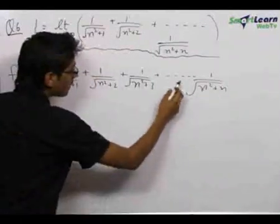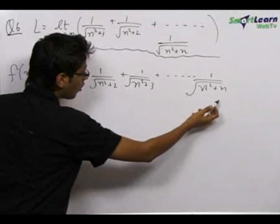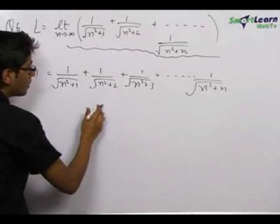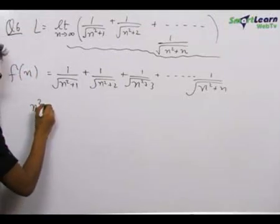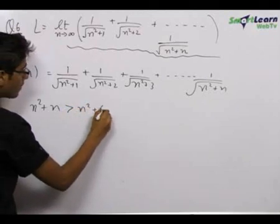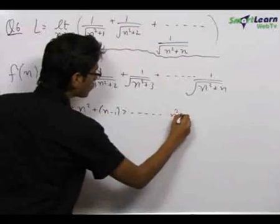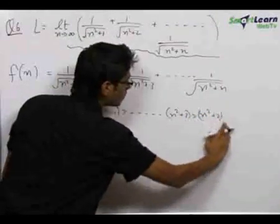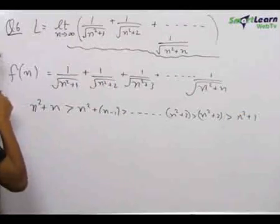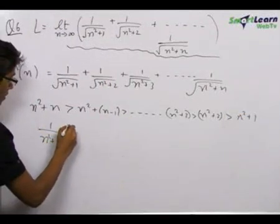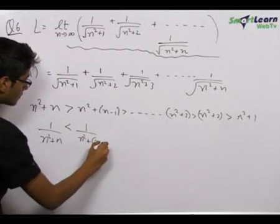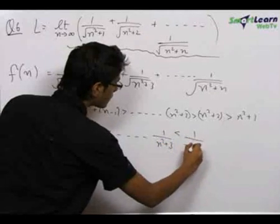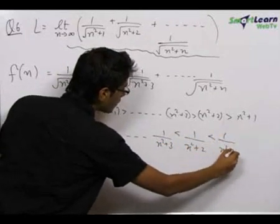Now, n square plus n is greater than n square plus n minus 1, which is greater than n square plus 3, which is greater than n square plus 2, which is greater than n square plus 1. Hence, 1 upon under root n square plus n is less than 1 upon under root n square plus n minus 1, less than 1 upon under root n square plus 3, less than 1 upon under root n square plus 2, less than 1 upon under root n square plus 1.